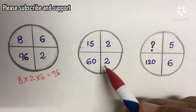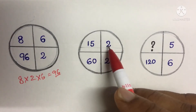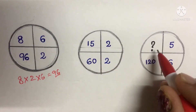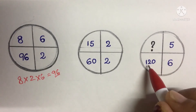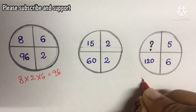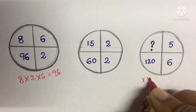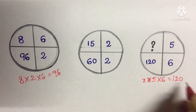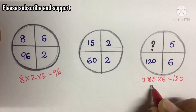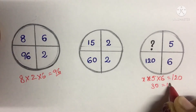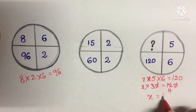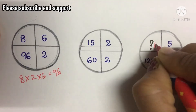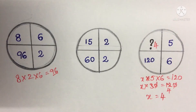This is the process to follow here. We have 15, 30, 60 — multiplied by 2 each time. Similarly here, we need to find out the missing number. The three numbers multiplied together should give 120. Let x be the missing number: x × 5 × 6 = 120. So 3 × 4 = 12, x = 4. Our answer is 4.